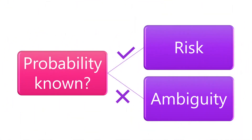In this video, we'll learn ambiguity aversion. It refers to people's tendency to choose an option with a known probability over an option with an unknown probability. Ambiguity means that the probability of outcomes is unknown. When you cannot assign a numerical probability to an outcome, you tend to avoid that option.